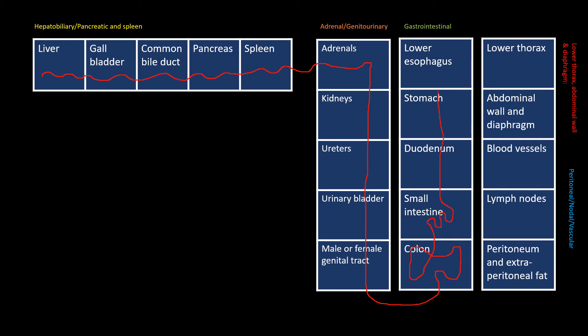You continue the gastrointestinal tract up, and from the lower esophagus you take a global look at the lower part of the thorax. Then you start the last group, which is in fact a group of anatomical domains rather than organs: the abdominal wall and the diaphragm. You look at this group in two scrolls — one with an eye oriented at the periphery, and the other oriented to the central parts of the abdomen and pelvis to look at the blood vessels, lymph nodes, and peritoneum. Like the small intestine, these are easy in the normal situation, but abnormalities of the peritoneum can sometimes be quite complicated.